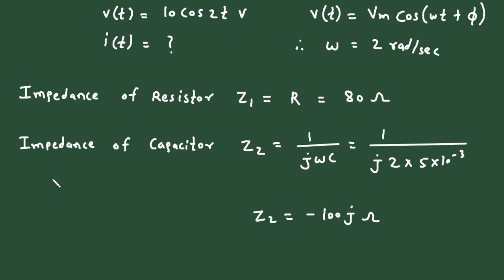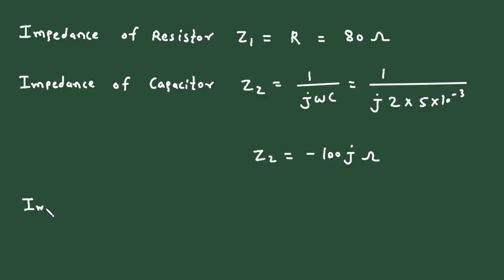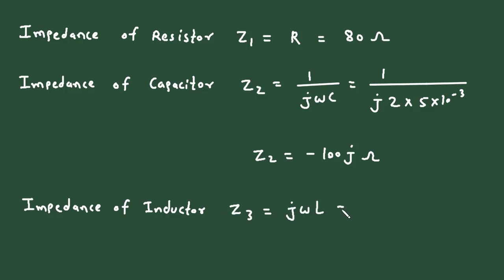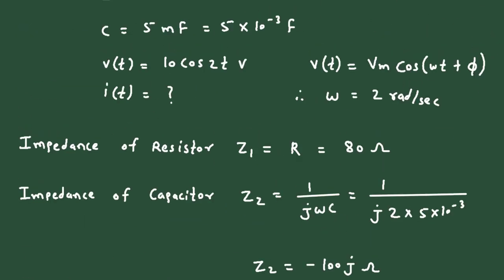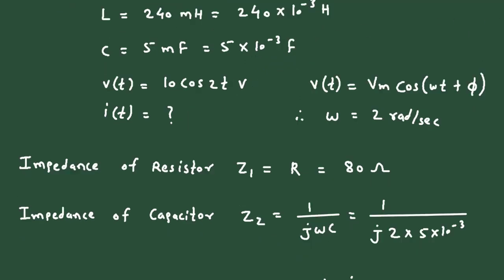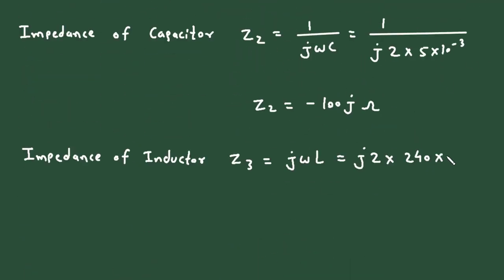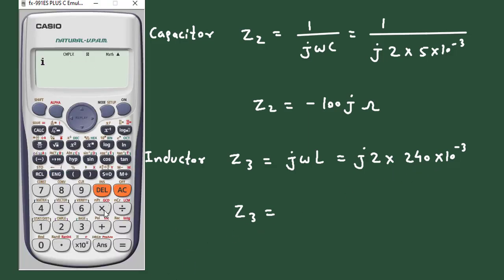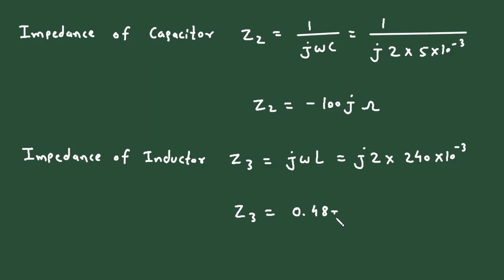The impedance of the inductor, let's call it Z3, is equal to jωL. So it will be j × 2 × 240 × 10⁻³. Solving in the calculator: j × 2 × 240 × 10⁻³ gives Z3 equal to j0.48 Ohm.